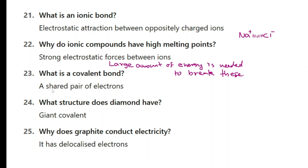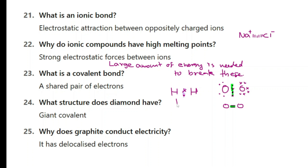What is a covalent bond? A covalent bond is formed by a shared pair of electrons. For example, between two atoms of hydrogen we have a covalent bond, or two atoms of oxygen — oxygen has six electrons in the outer shell and they keep two pairs in the middle as shared electrons, forming a double bond. The single bond between atoms of hydrogen is also a covalent bond.